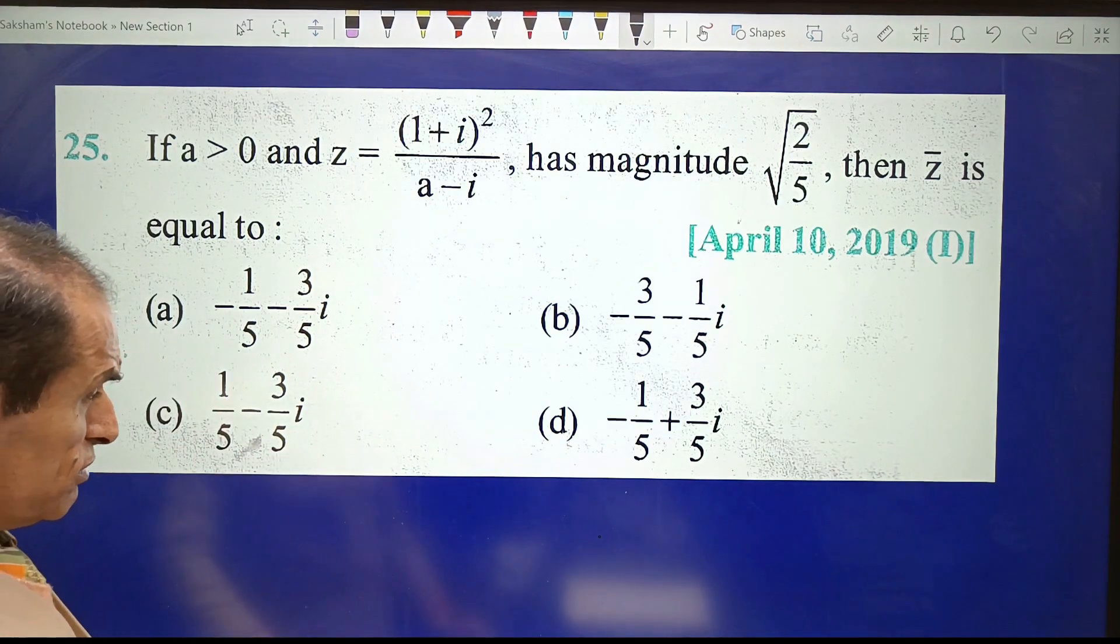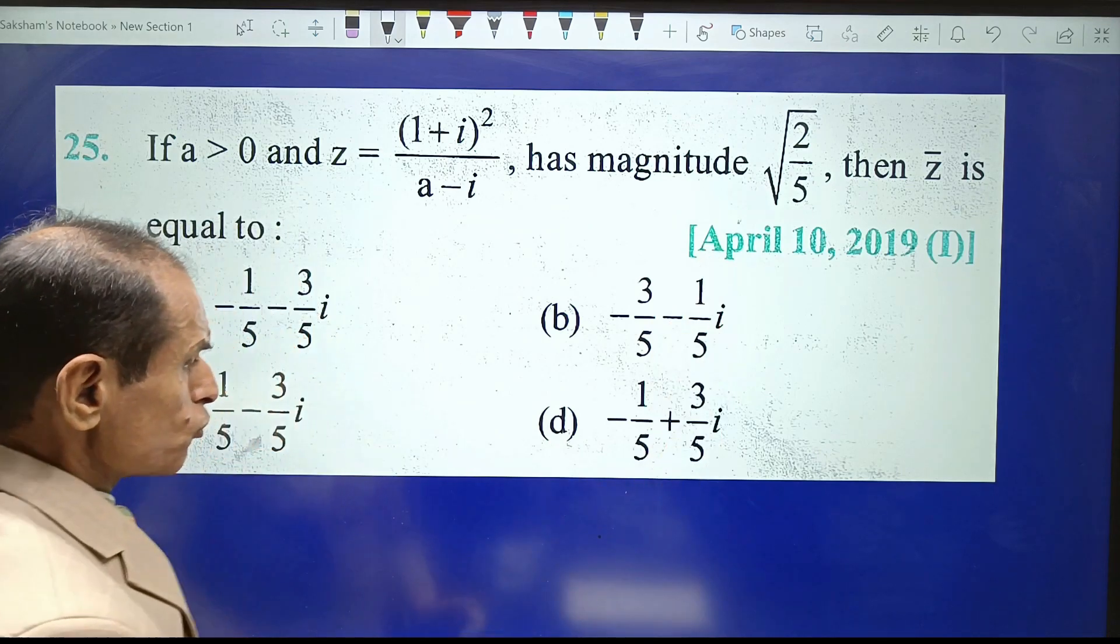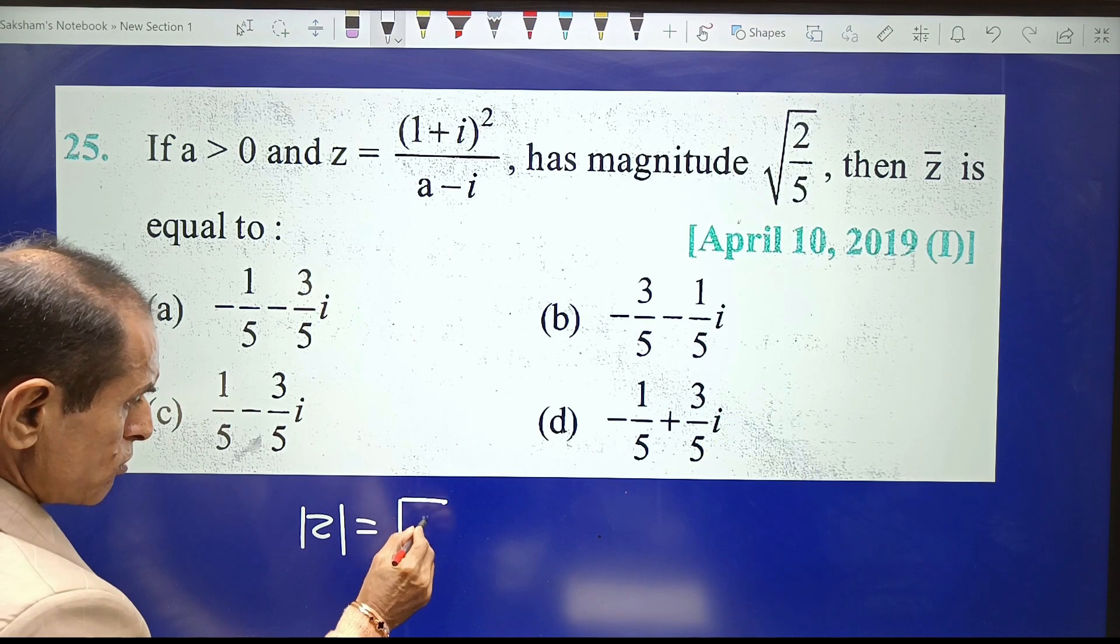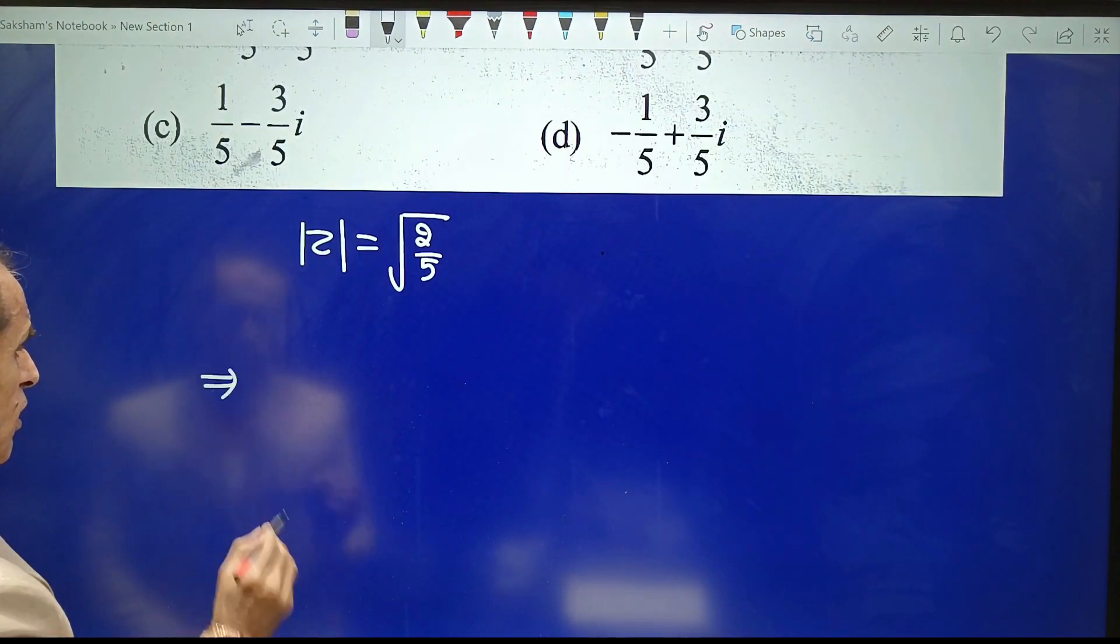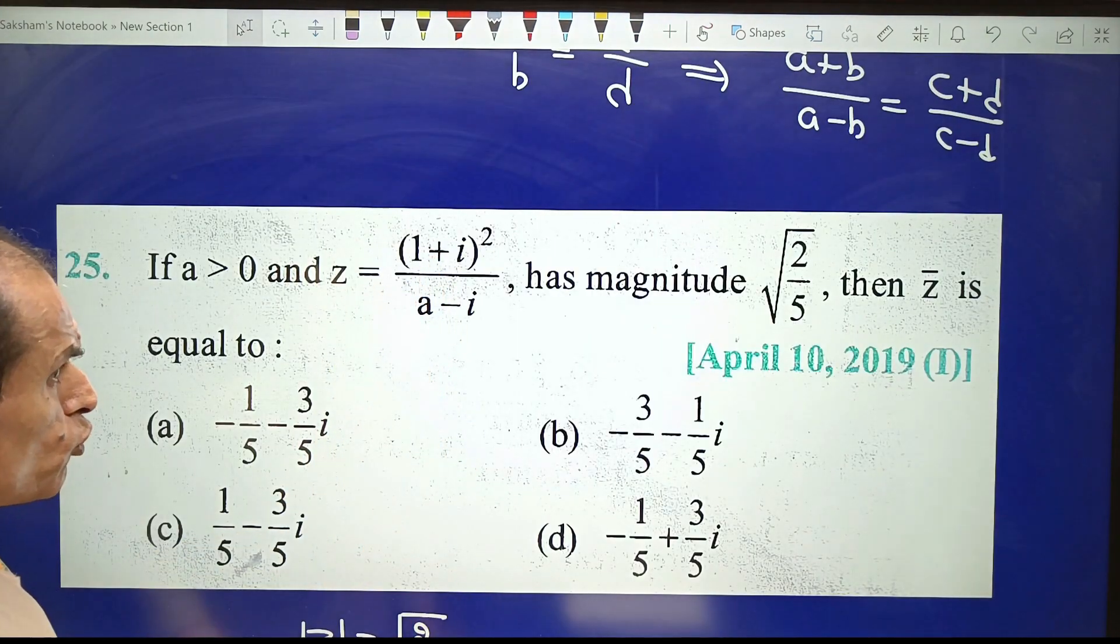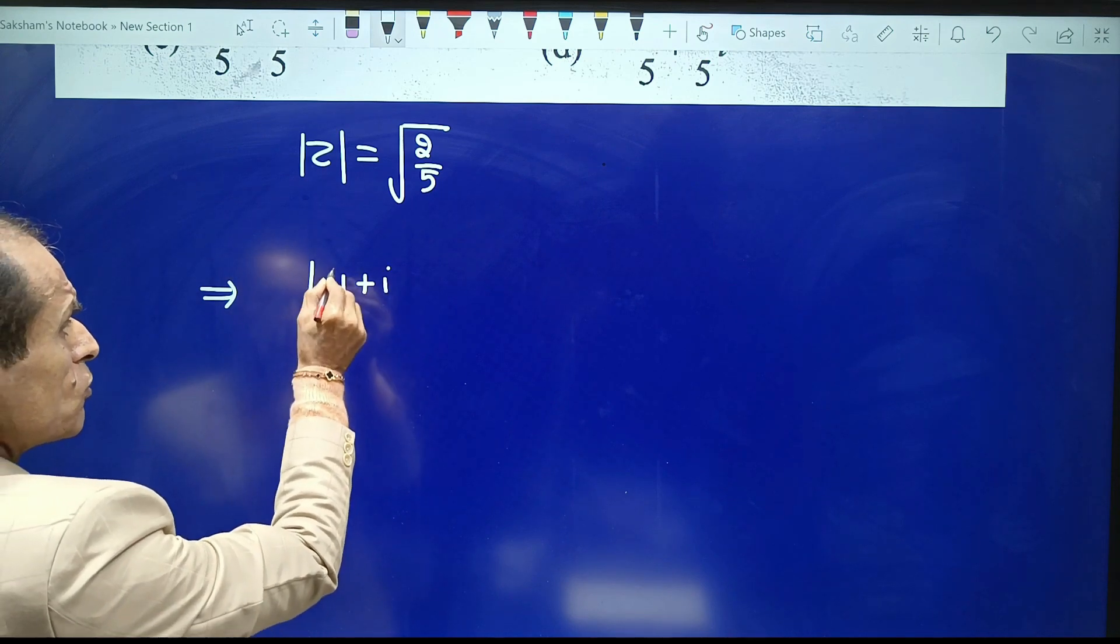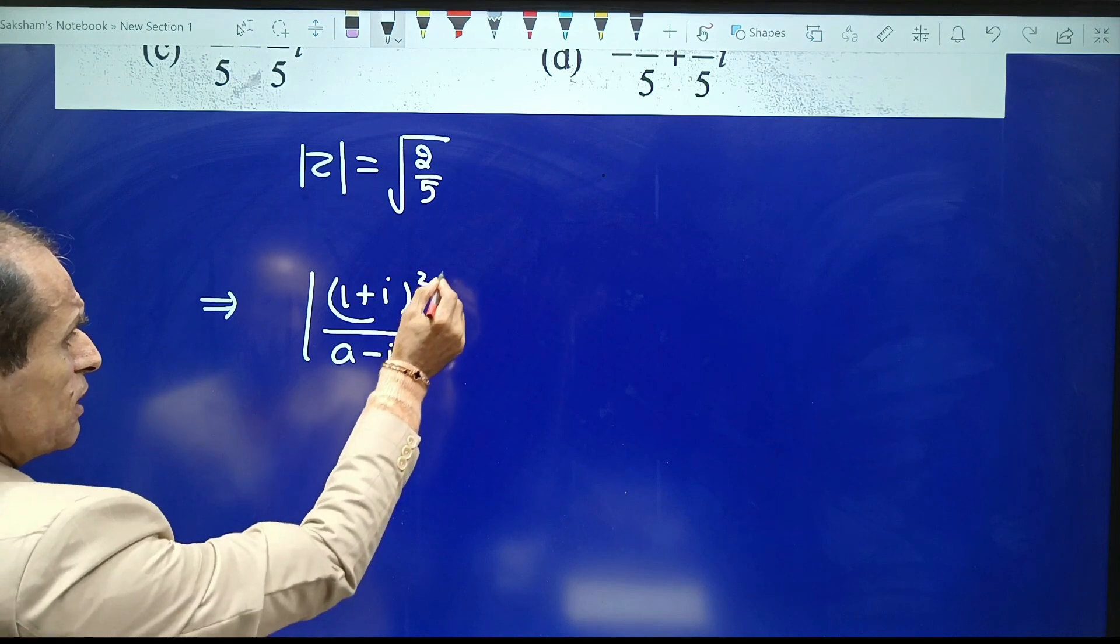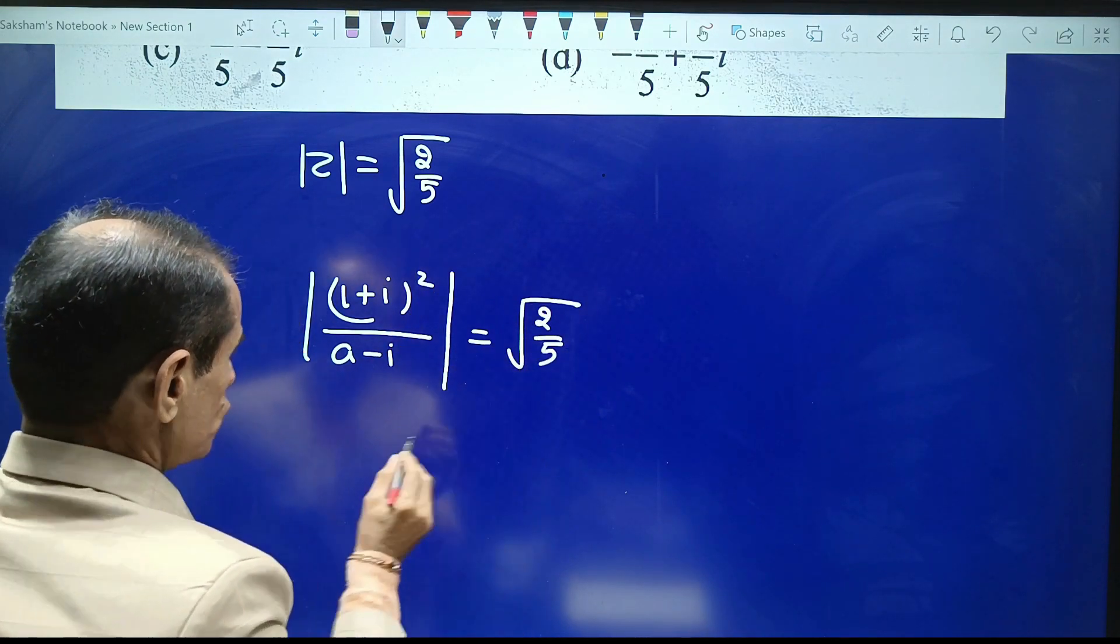You have to find the correct choice. As it is given that |Z| = √(2/5), we conclude that |(1+i)²/(a-i)| = √(2/5).